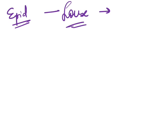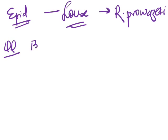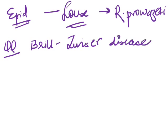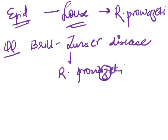Epidemic typhus has louse as the vector. Louse is very provocative — so it is caused by Rickettsia prowazekii. Regarding other frequently asked questions: Brill-Zinsser disease — remember that the only Rickettsia which has a Z in its spelling is prowazekii. So Brill-Zinsser disease is caused by Rickettsia prowazekii.